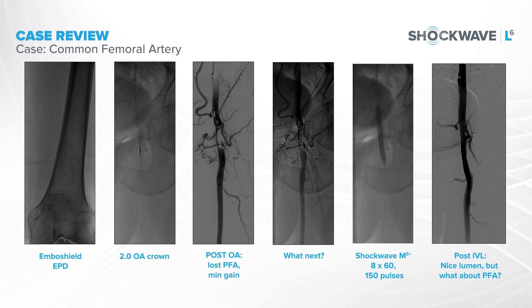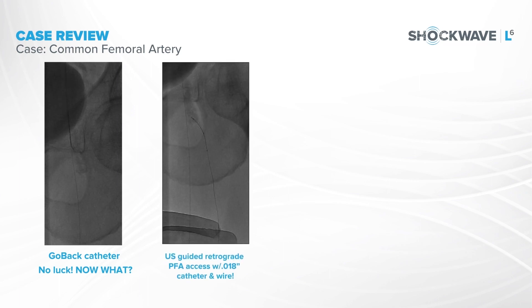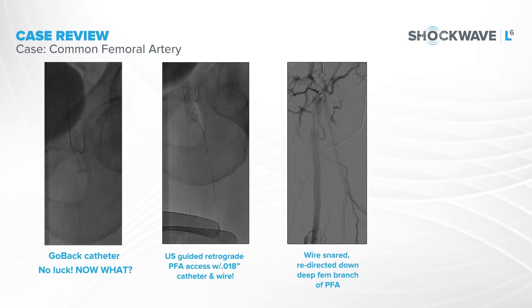But that loss of the profunda was really bugging me. We tried a reentry device to get back into the true lumen, but it was no dice — the calcium was just so bad. So we took a page from our CLI playbook: if we do retrograde pedal access, why not try a retrograde profunda access? We did it the same way with an 018 wire and an 018 support catheter, and we were able to traverse that profunda occlusion retrograde.